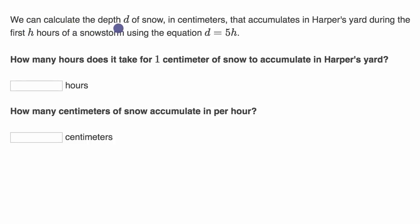We can calculate the depth d of snow in centimeters that accumulates in Harper's Yard during the first h hours of a snowstorm using the equation d equals five times h. So d is the depth of snow in centimeters, h is time that elapses in hours.